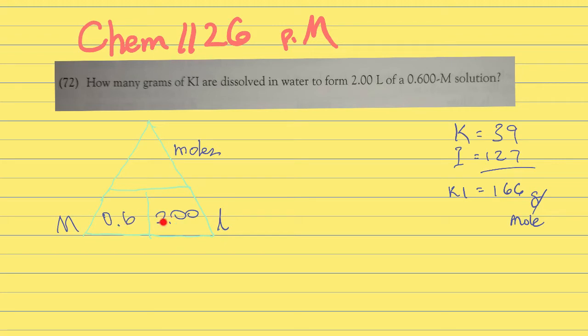To solve this, because these two are side by side, we're going to multiply them together. When we do that, notice we get 1.2 moles of KI.